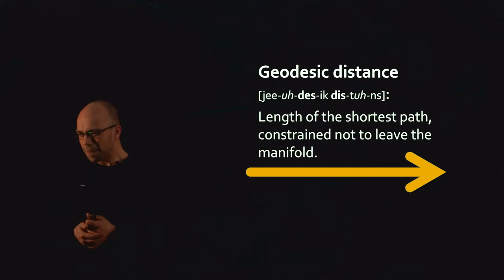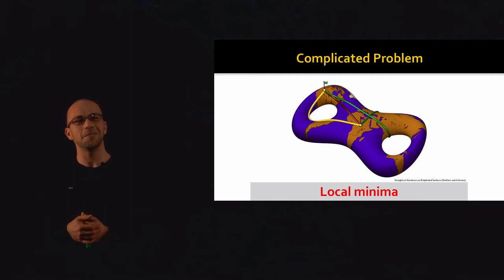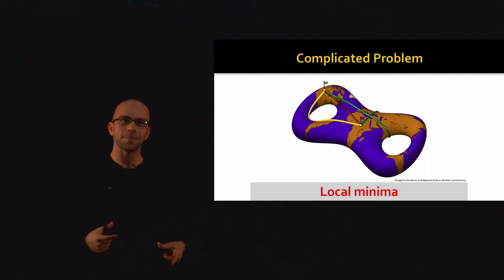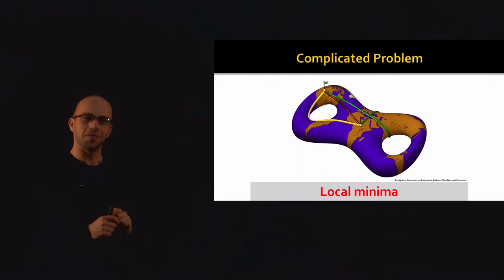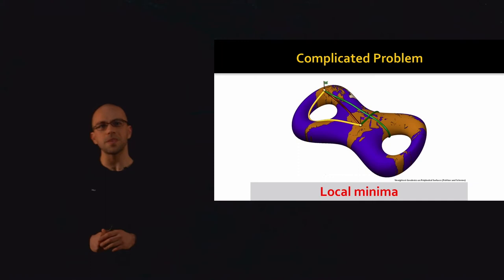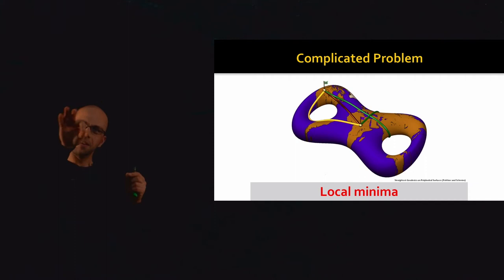Why is it such a complicated problem? Computing distances on a manifold gets complicated fast. Take a look at this double torus — a surface with two holes, like two donuts glued together, with a texture of Earth wrapped around it. Consider two points with flags: one in Africa and one in North America on our double torus Earth. I can connect those two points with three different pieces of string — yellow, green, and red — and those three strings are doing something fundamentally different. The yellow cuts across a handle, the red moves more or less straight, and the green wraps around the outer handle and back.